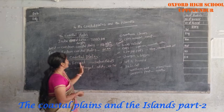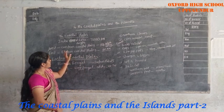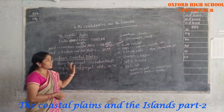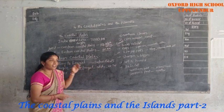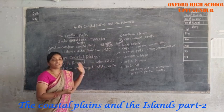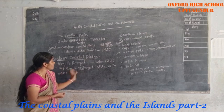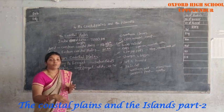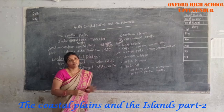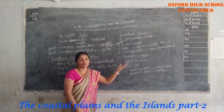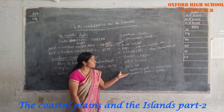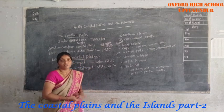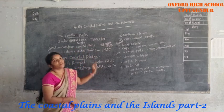To summarize: the Eastern Coastal Plains lie between the Bay of Bengal and the Eastern Ghats. They are wider than the Western Coastal Plains, stretching from West Bengal through Odisha, Andhra Pradesh, and Tamil Nadu up to Kanyakumari. There is heavy rainfall and a hot and humid climate.